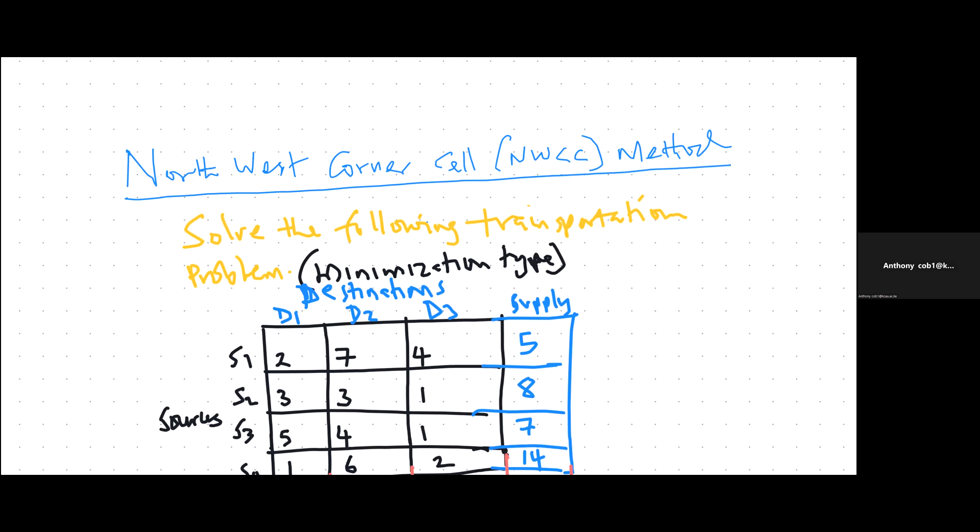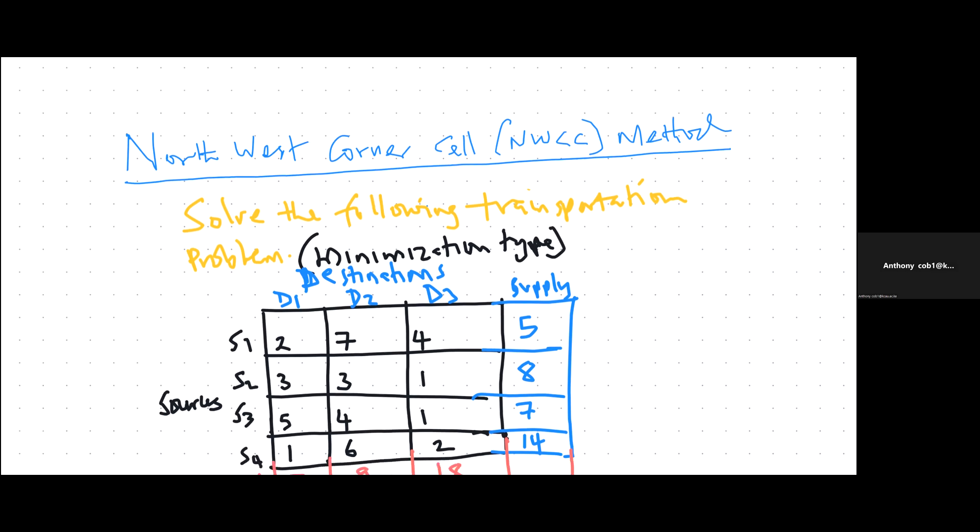Hello everyone, and welcome to this subtopic. We have already defined what transportation is and what a transportation problem is, where we said that transportation involves the movement of goods and services from one or several sources to different destinations in such a way that some functionality is optimized — for example, in such a way that we minimize cost or we maximize profits.